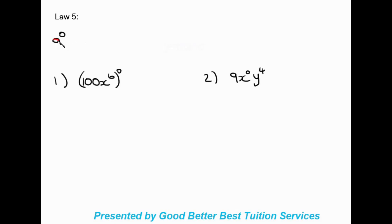Law number five: a to the power of zero. Anything raised to the power of zero equals one. For example, 100 x to the power of six, all in brackets to the power of zero — because the zero is outside the bracket it affects the whole bracket, meaning this whole term equals one.